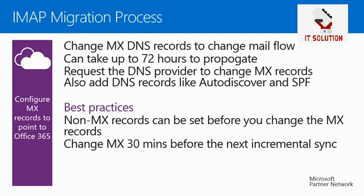You can request your DNS provider to change the MX records, or use their control panel to change DNS settings yourself. It is also recommended to update DNS records like Autodiscover and the Sender Policy Framework — you will find their values in the Domains pane in the Office 365 admin center. You can update these records before changing the MX records, so users can connect via Outlook while migration is still in process. If you change the MX records approximately 30 minutes before the next incremental synchronization, you may not need to wait another 24 hours.